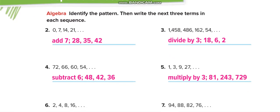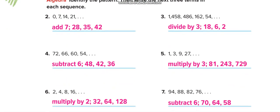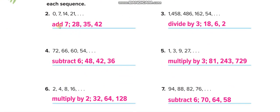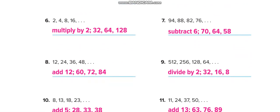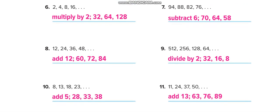Here, next page, independent practice. You have to solve all these questions by yourself. Like here they're showing you the rule. What is the rule for the sequence? Add 7 is the rule for the sequence. Divide by 3 is the rule for this sequence, and then the next three terms. So you have to do all these questions by yourself and then match your answers from this video.